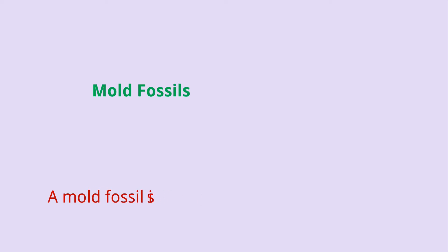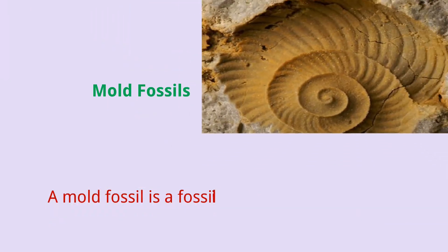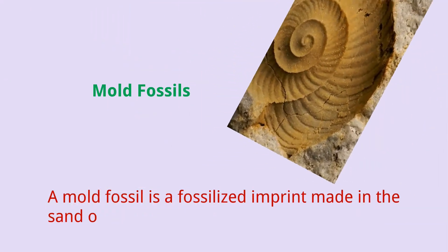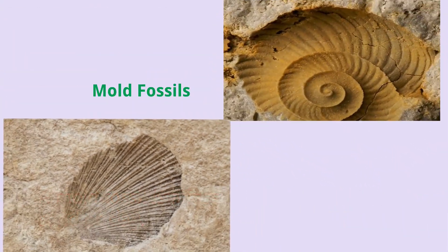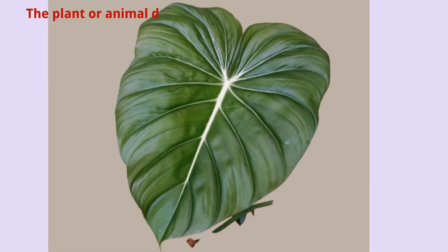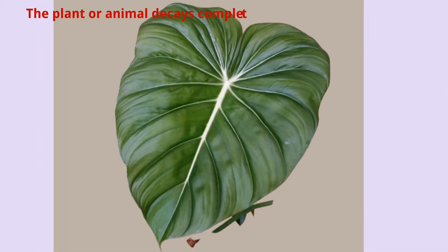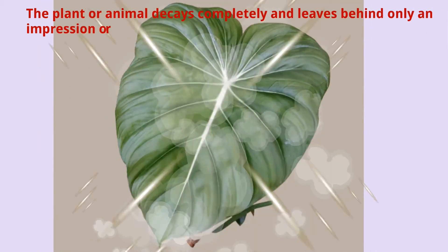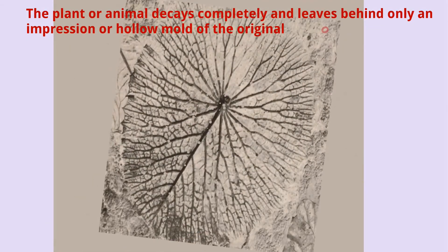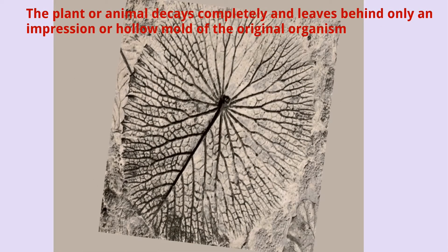A mold fossil is a fossilized imprint made in sand or clay. The plant or animal decays completely and leaves behind only an impression or hollow mold of the original organism.